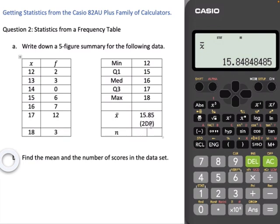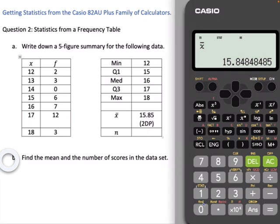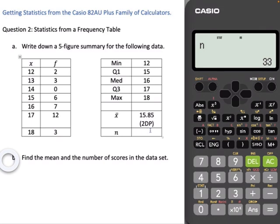And the n, let's see how many numbers are in our data set. It should be the same as the column total here. So let's make sure that it is: Shift, Stat, var, and n for number, 33. Oh, I must have miscounted 33. Let's just check that out. 5, 11, 18, 30, 33. Yep, that's right. Made a mistake the first time. And there you go. That's how you get a five-figure summary and the mean and number in your data set based on a frequency distribution table.